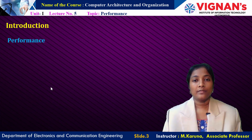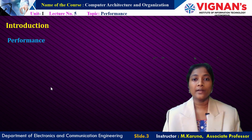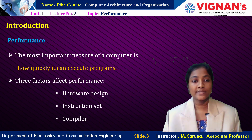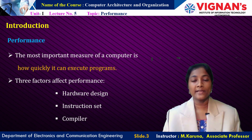Nowadays the world is running too fast, so computers also should run at a faster rate. While performing any task by the computer, the performance may be affected by the following factors: hardware design, instruction set, and compiler design. The most important measure of a computer is how quickly it can execute programs. To achieve better performance, the designer of the computer system must consider these factors.